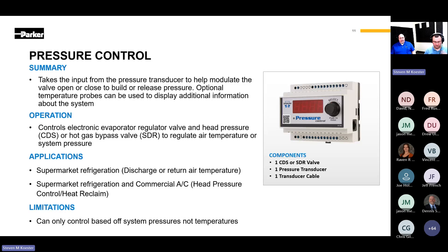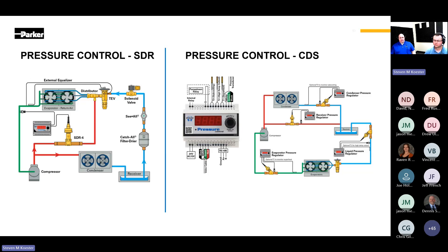The pressure control is used to actuate an electric valve to help regulate the pressures at the point the transducer is attached in the system. This valve can be an SDR or CDS valve depending on multiple applications for refrigeration and commercial HVAC. A pressure control can be used to regulate your condenser, receiver, evaporator, and liquid pressures. Each of these applications has the pressure transducer in the location where you wish to influence pressure. This transducer will read your pressure and transmit it to the controller, which will determine if the CDS valve needs to open or close. The placement of the pressure transducer changes due to the application the controller is being used in.